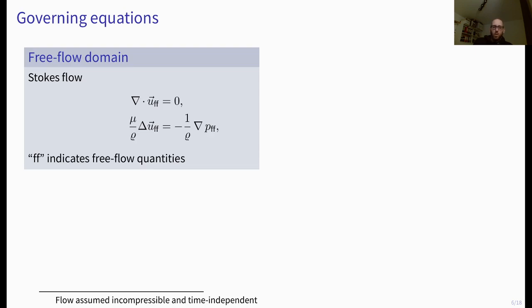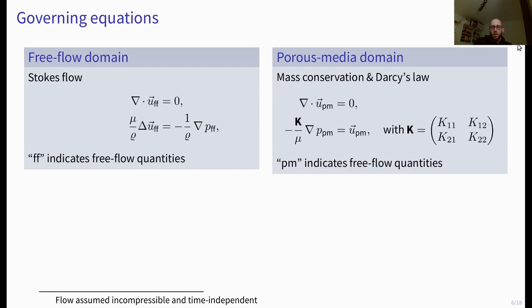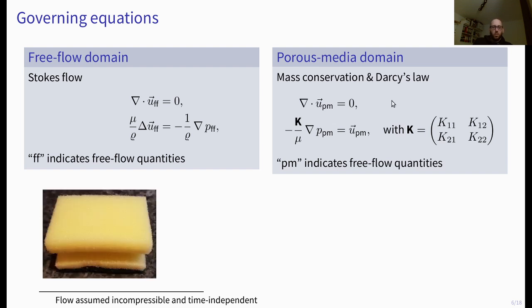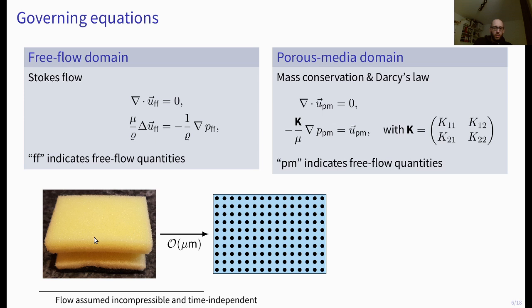There's nothing too special in the free flow domain as I already said you can model that for example with Stokes flow, the standard flow conditions and when I talk about free flow quantities are usually put an ff for free flow on there so you know in which domain or which subdomain we are in. And in the porous media domain we have like the equation for mass conservation and Darcy's law. In this sense also nothing special, it's a very standard model. And in case you're not too familiar with porous media there's a very short introduction here. You find or see a sponge like you can find it in the kitchen, this is at least the sponge that I found in mine.